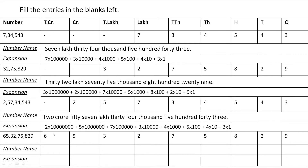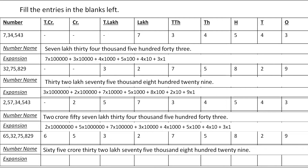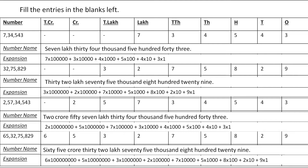In the next example, 6 is in the Ten Crore place and 5 is in the Crore place, then 32 falls in the Lakh group, 75 falls in the Thousands group, and 829 is in the Ones group. So the number name is 65 crore, 32,75,829. The expansion is: 6 × 10 crore + 5 × 1 crore + 3 × 10 lakh + 2 × 1 lakh + 7 × 10,000 + 5 × 1,000 + 8 × 100 + 2 × 10 + 9 × 1.